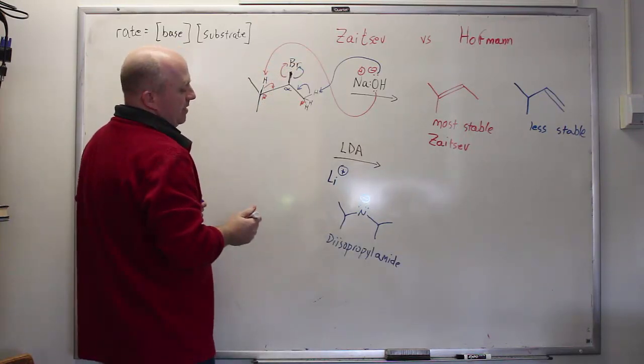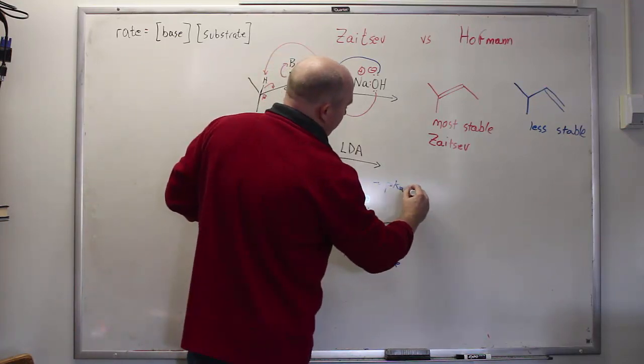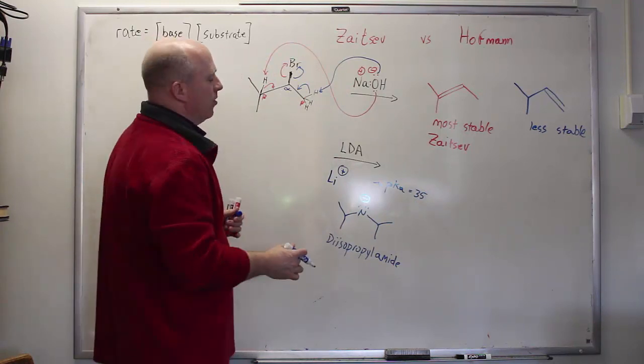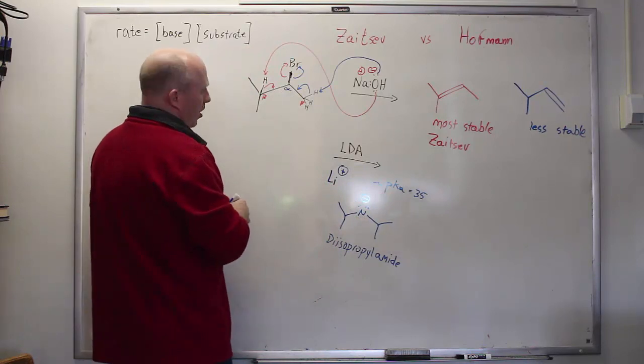Now, what is the pKa of a deprotonated amine? The pKa here is about 35 or so. In practice, the pKa for LDA itself is probably more like 40 to 42. But for a general amine, we would say 35. So 35 is not a bad ballpark rule.